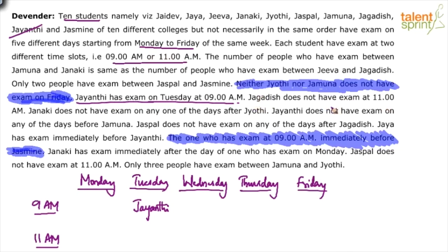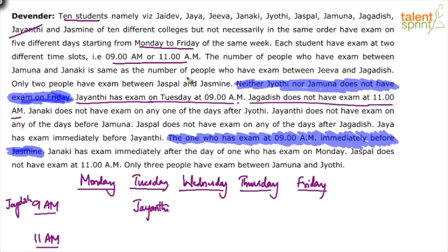Jagdish will take the 9am slot. The number of people between Jamuna and Janaki is same as those between Jeeva and Jagdish — this cannot be used immediately. Only two people have exam between Jaspal and Jasmine — this also cannot be used immediately. Then Janaki does not have exam on any of the days after Jyoti, which means Janaki has exam before Jyoti, but not useful immediately.